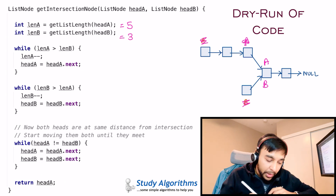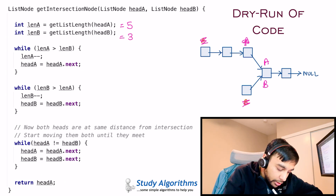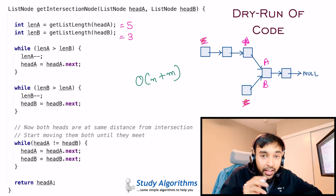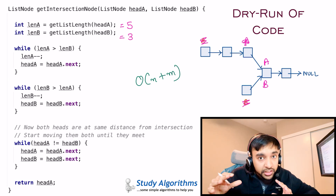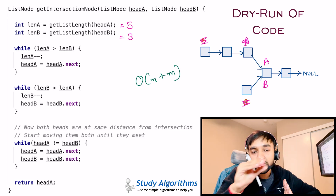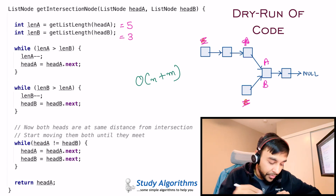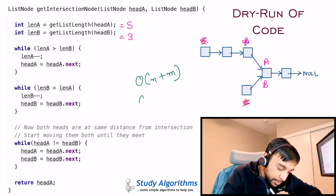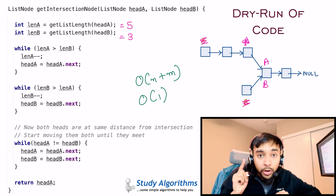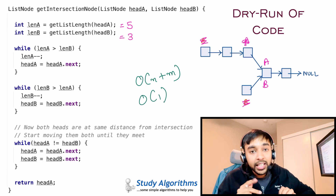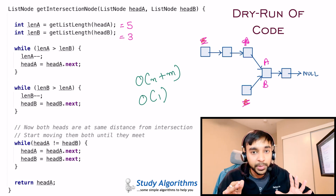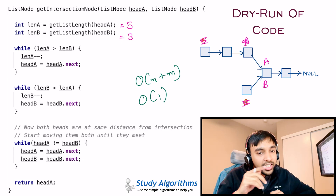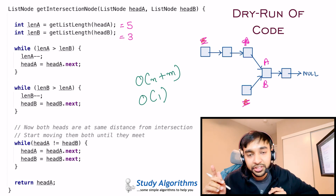The time complexity of this solution is O(n + m), where n and m are the lengths of the two lists because you are traversing them once. The space complexity is O(1) because you are not consuming any extra space — you are just traversing the lists.